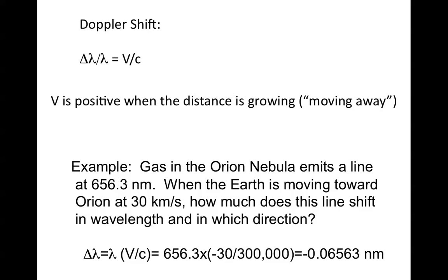So let's give a concrete problem-set type example. We have gas in the Orion Nebula. It emits a line of hydrogen, atomic hydrogen, at 656.3 nanometers. This is the line that makes the nebula look red.